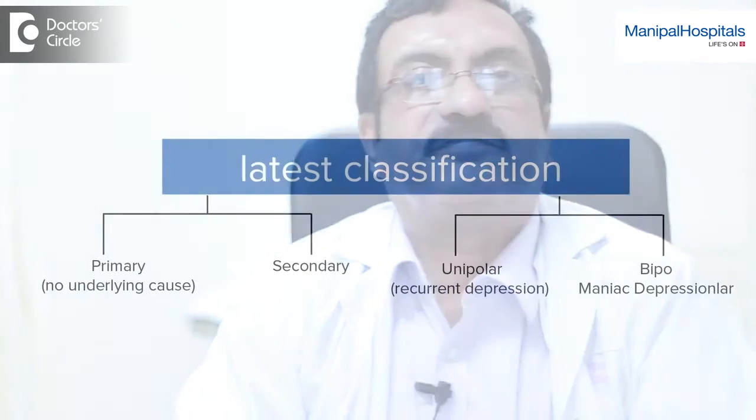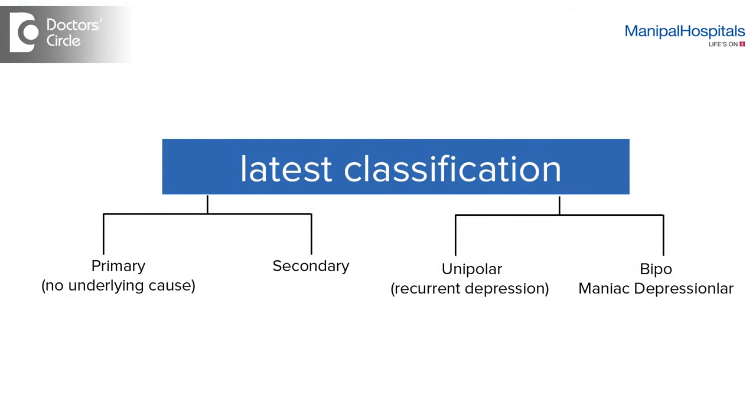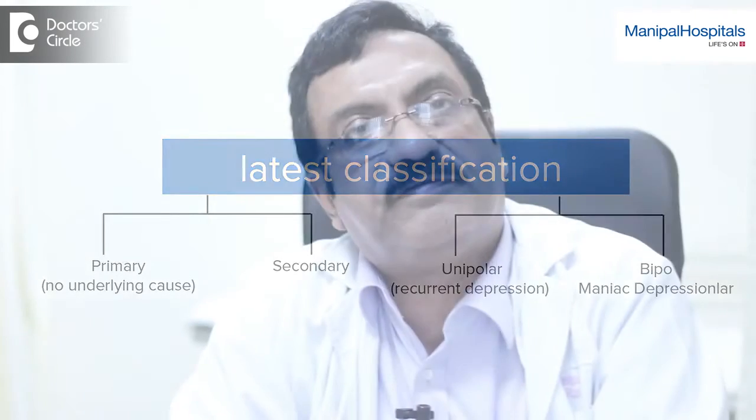The present classification focuses on the severity of depression. Depressions are divided into major and minor depressions, or major depression and dysthymic disorders, depending on how severe they are. Either way, moderate to severe depressions need to be treated, and treated as fast as possible.